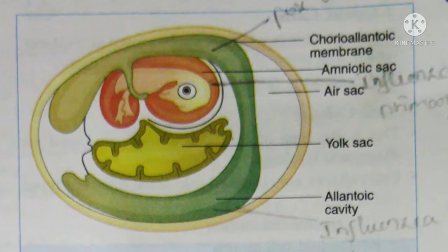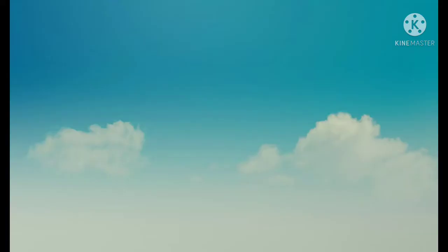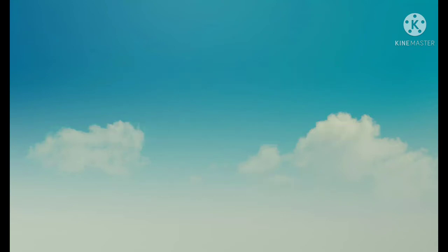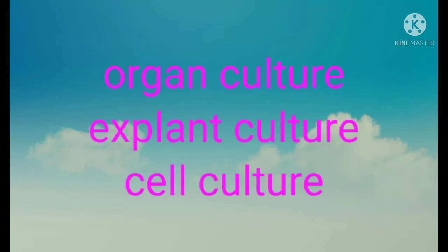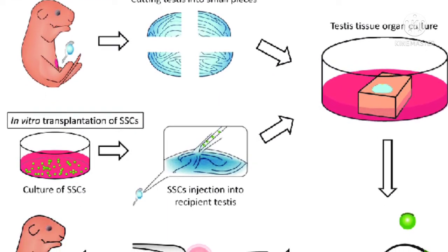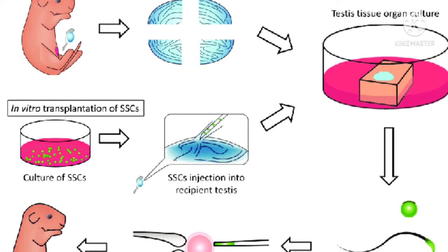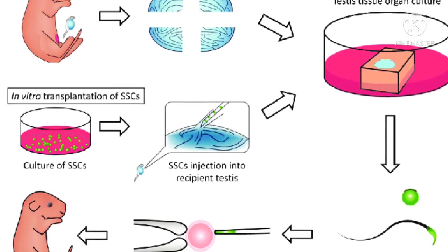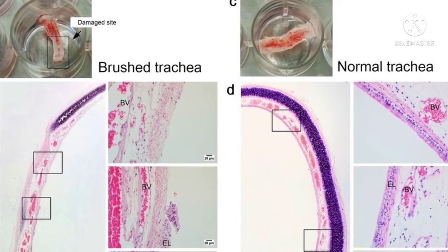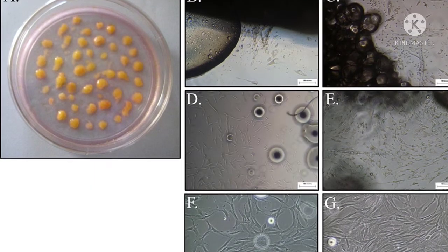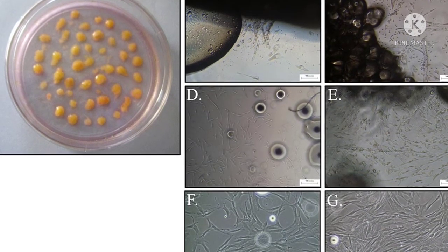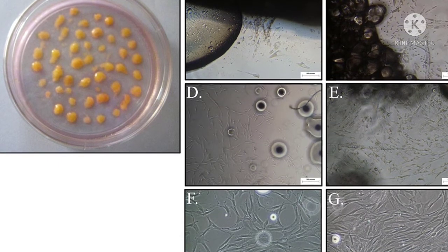Tissue culture: three types are available — organ culture, explant culture, and cell culture. In organ culture, small bits of organs are maintained in tissue culture growing medium, useful for isolation of highly specialized parasites of certain organs, such as tracheal ring culture for isolation of coronavirus, a respiratory pathogen.